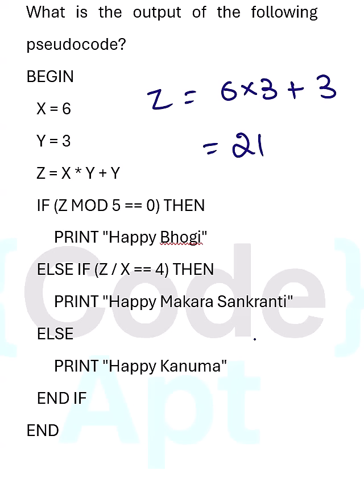Now Z is 21. The mod operation gives the remainder when dividing by 5. If 21 divided by 5 gives remainder 0, we display that result. But the remainder is not 0 since 21 is not divisible by 5, so this will not display.